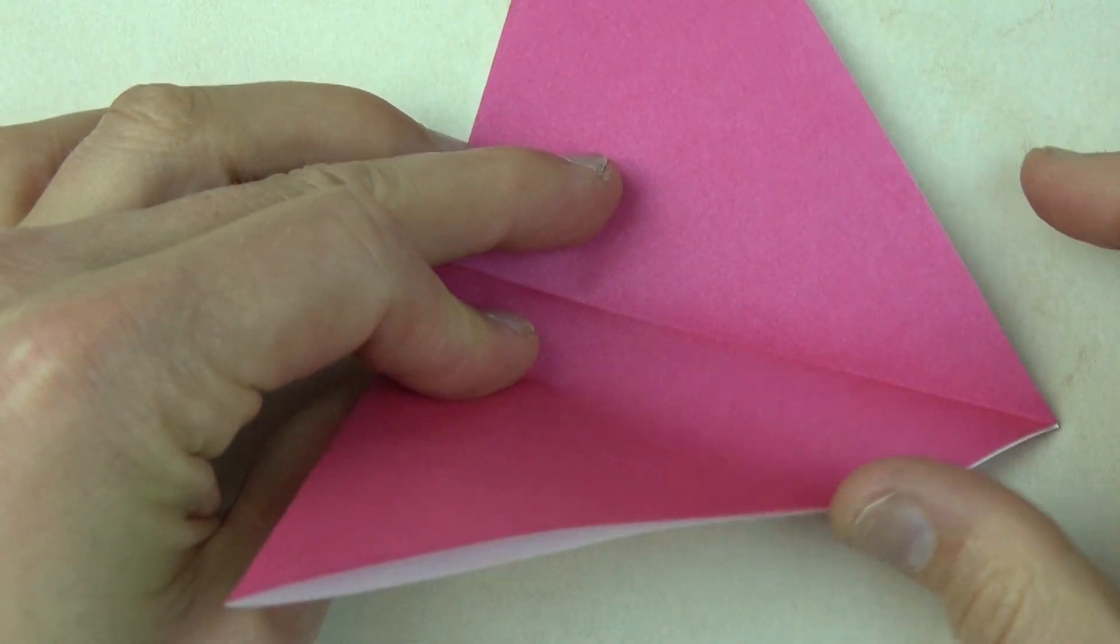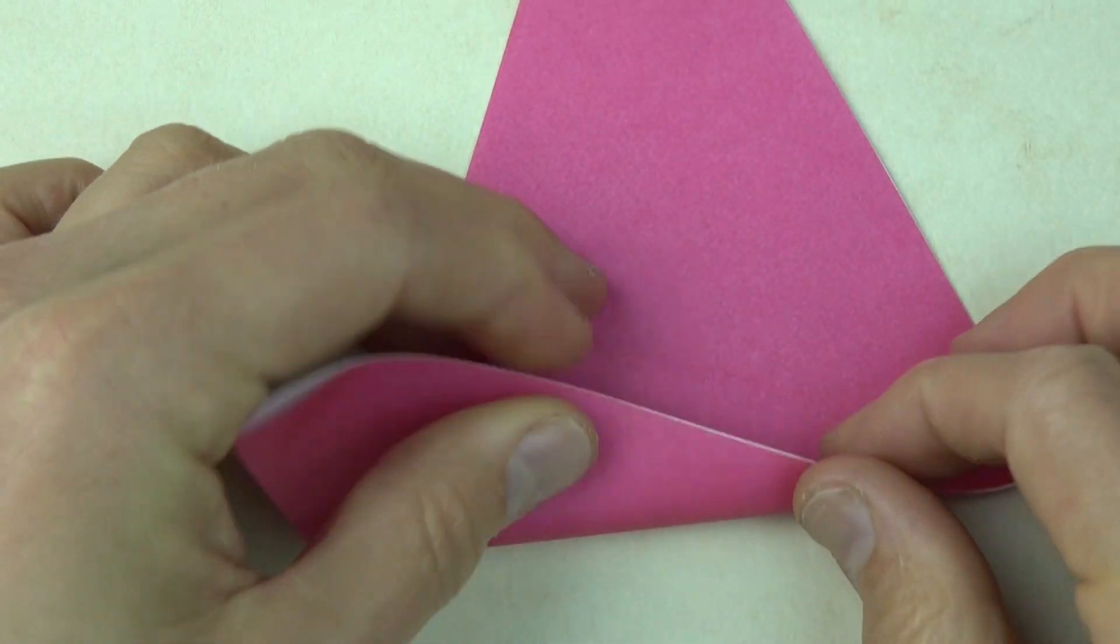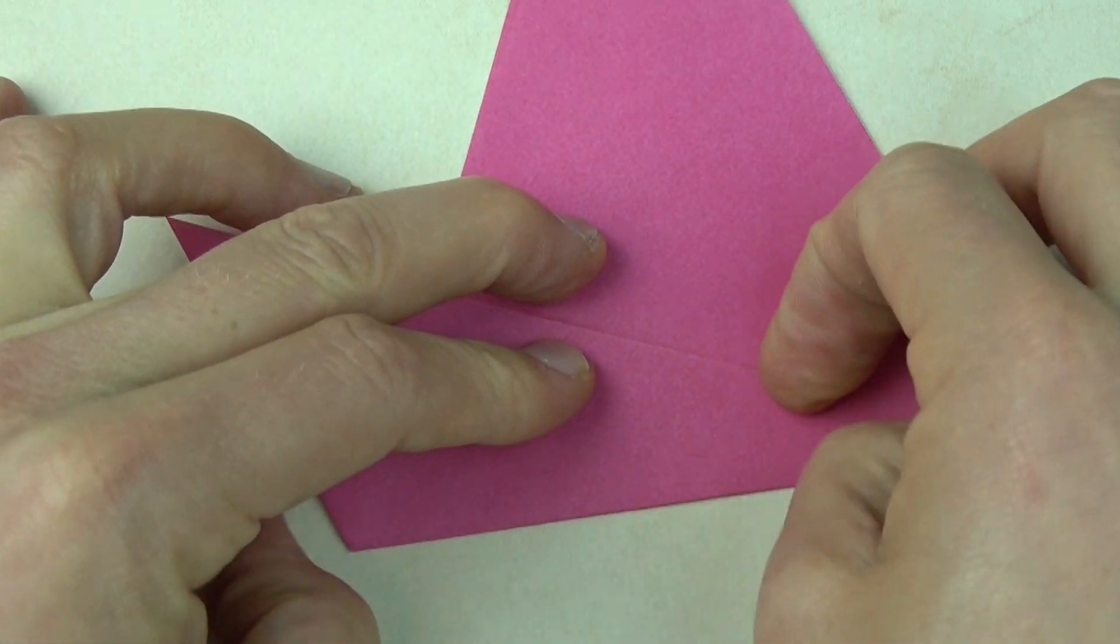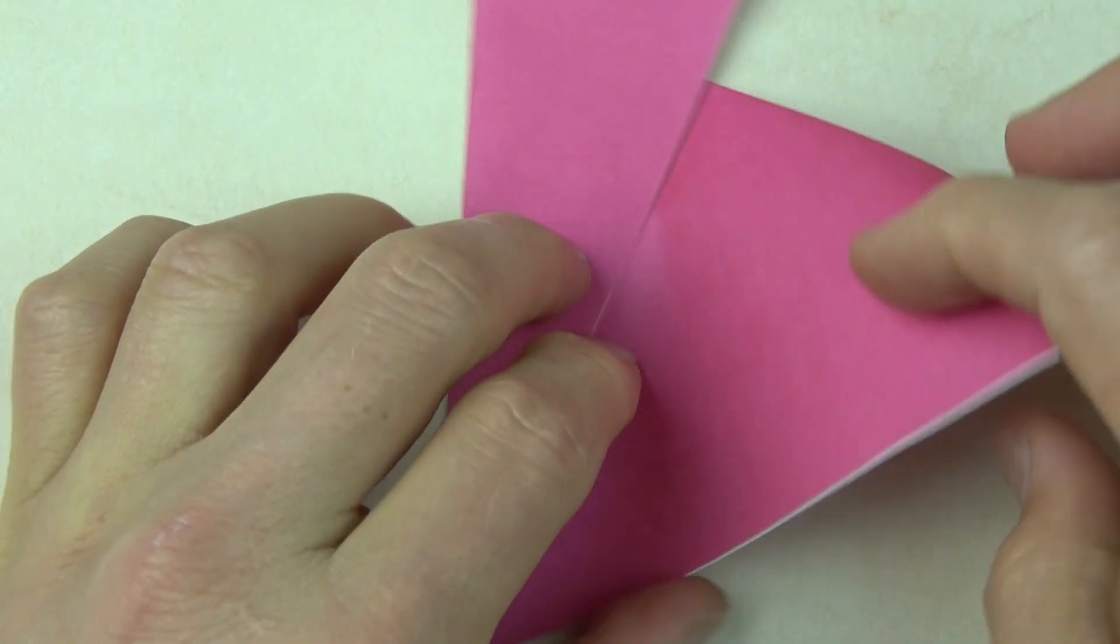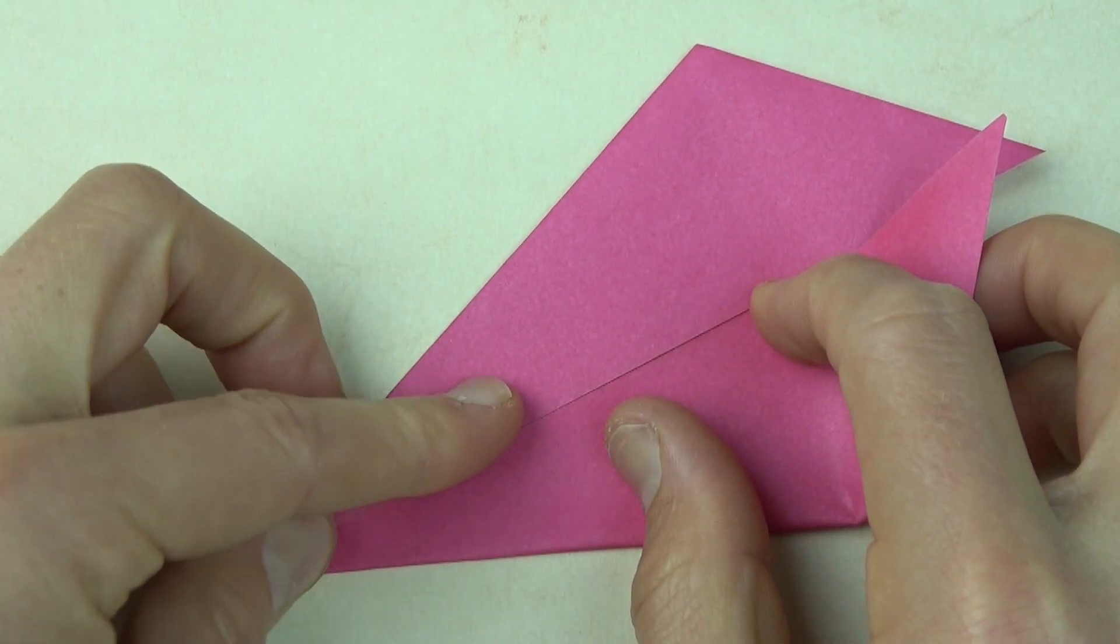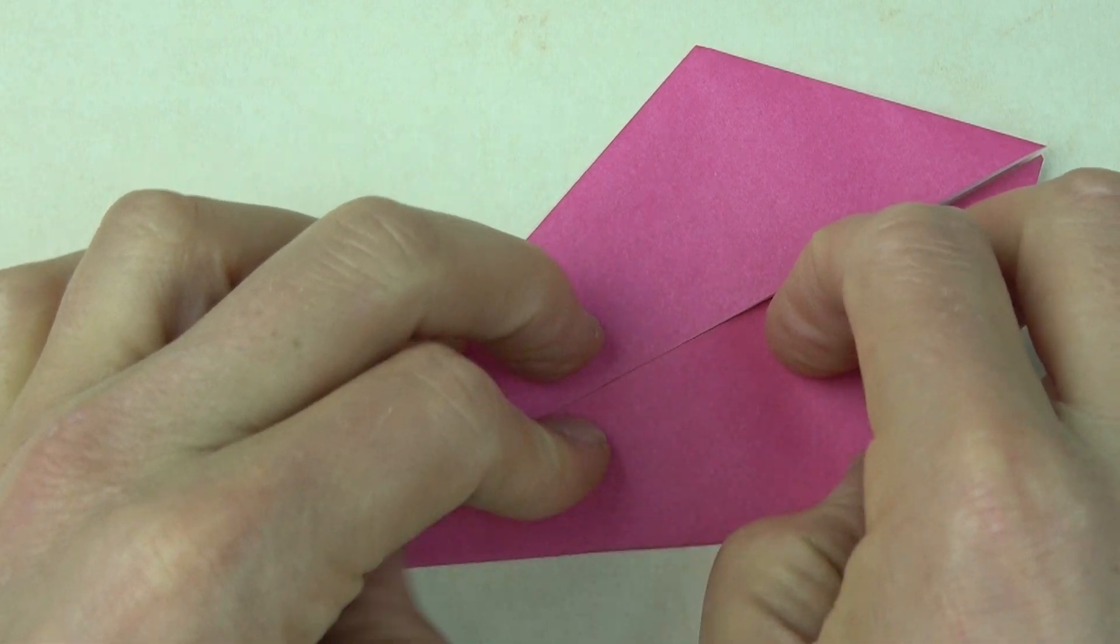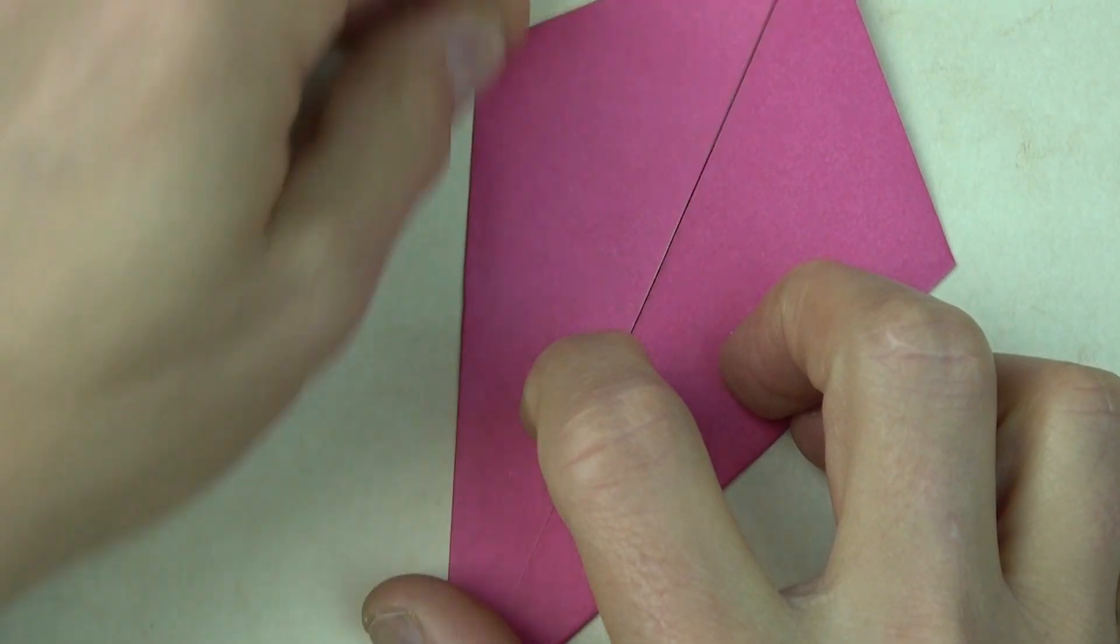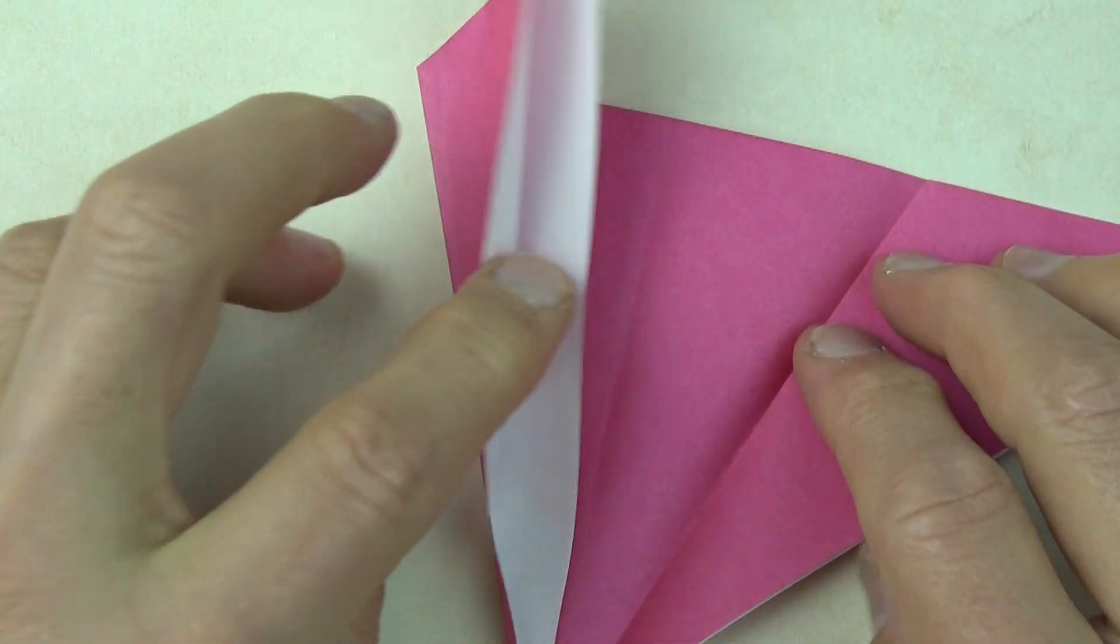And now fold this edge to the crease. And repeat on this side. Make those creases nice and sharp. And unfold.